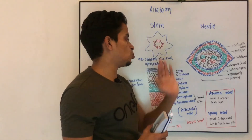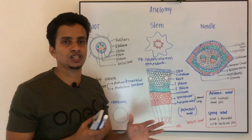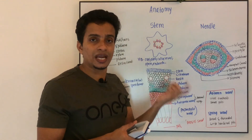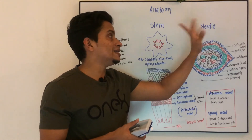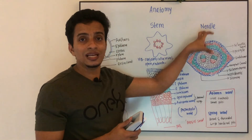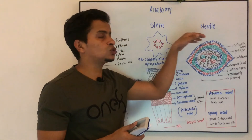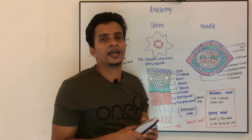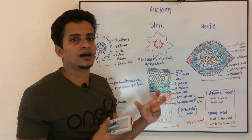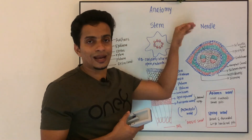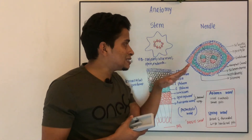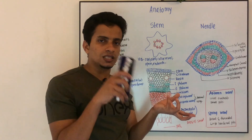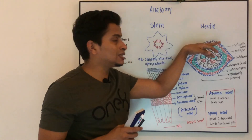Now moving to our next topic — the internal anatomy of the needle, from a practical point of view, the needle section in Pinus. The needle section is roughly triangular in nature. It is also divided into epidermis, hypodermis, cortex, endodermis, pericycle, and stele region. The epidermis is very thick. Here and there you can see sunken stomata. Just below the epidermis are a few layers of sclerenchyma acting as hypodermis, which represents the xerophytic nature of this plant.